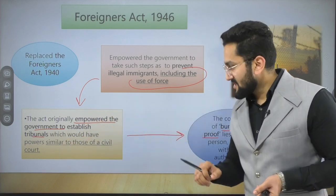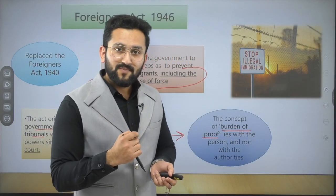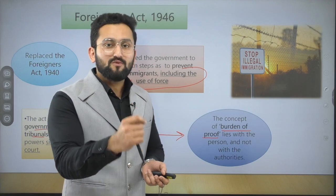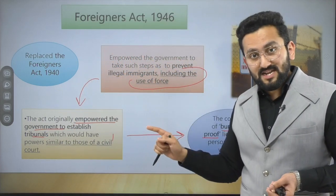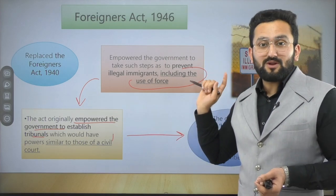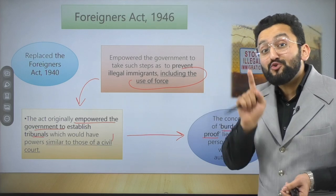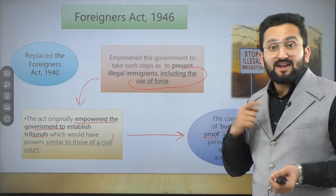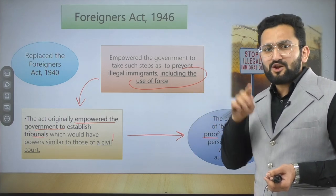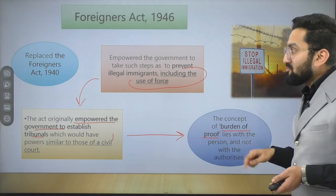This is another point of contention. As per the Foreigners Act 1946, the burden of proof lies on you. If a government authority sends you a notice to appear before the foreigners tribunal because there is suspicion that you are not Indian, then the burden of proof is on you to prove that you are a citizen of India. It is not the burden of the authority to prove that you are not a citizen — you have to prove that you are. This is a point of contention.